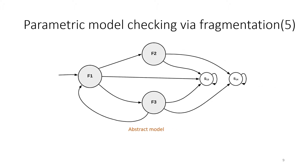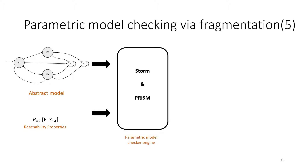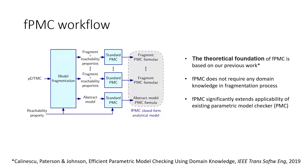We call this reduced model the abstract model. We then pass this abstract model along with the original PCTL property to the existing PMC, which will return an expression called the abstract expression. The obtained fragment expressions together with the abstract expression are the output of FPMC — it is equivalent to a single complex expression generated by existing PMC.